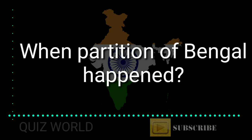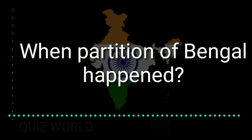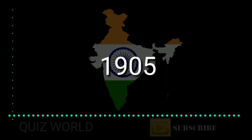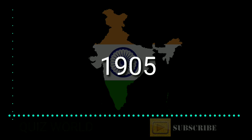When did the Partition of Bengal happen? Answer is 1905.